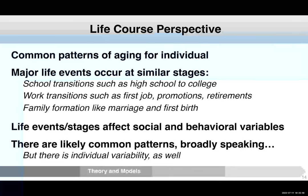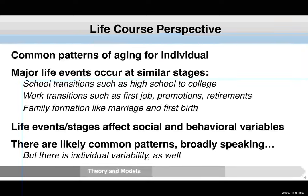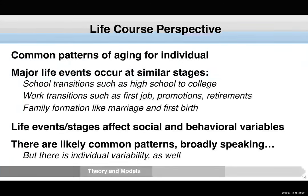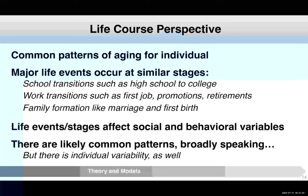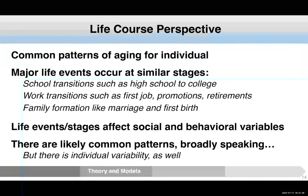There's another perspective sometimes called the life course perspective, which suggests there are common patterns of aging for individuals. Life events occur to nearly everyone, often at similar stages in life — graduating from elementary to middle school or high school to college, work transitions like the first job, promotion, and retirements, or family formation like getting married or having a first birth. These life events affect the social and behavioral variables we're studying. There are likely to be common patterns broadly speaking, but there is individual variability — you allow individuals to have these rough stages, but you're not expecting everyone to have the same intercept or the same rate of change.